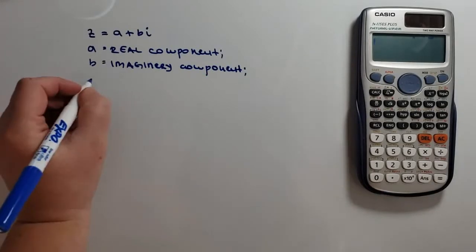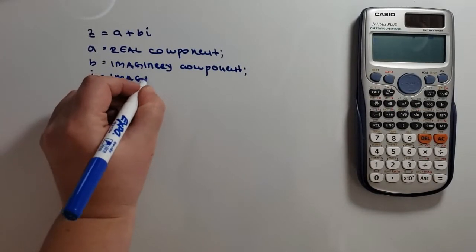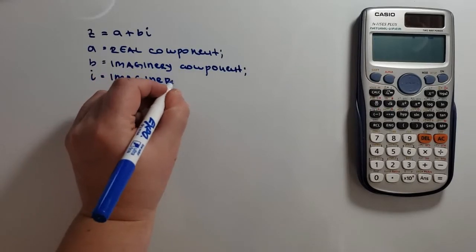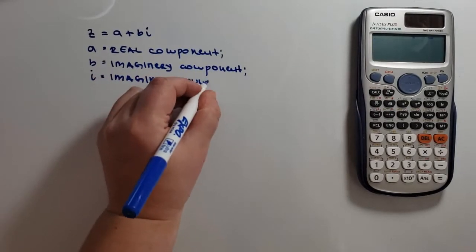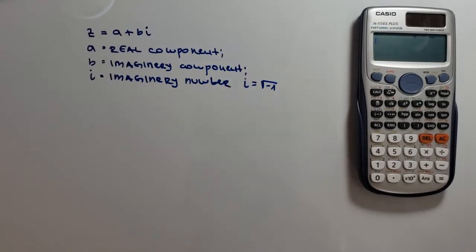And i is the imaginary number, or i is equal to square root of minus 1.